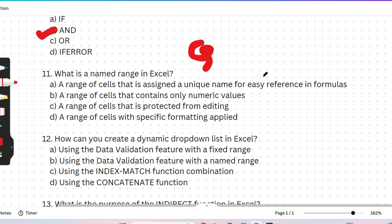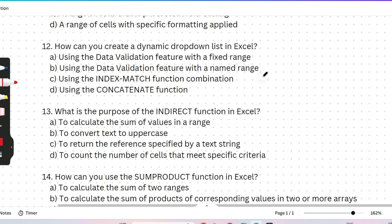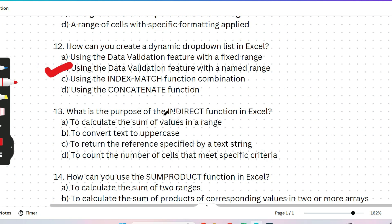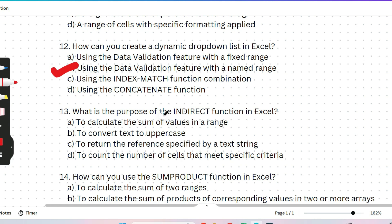The next question: how can you create a dynamic drop-down list in Excel? Options: (A) using the data validation feature with a fixed range, (B) using the data validation feature with a named range, (C) using the INDEX MATCH function combination, or (D) using the CONCATENATE function. Please pause the video, think, then give the answer. The correct answer is B — using the data validation feature with a named range. If you want to know more about these Excel features, let me know and I'll create a separate playlist.